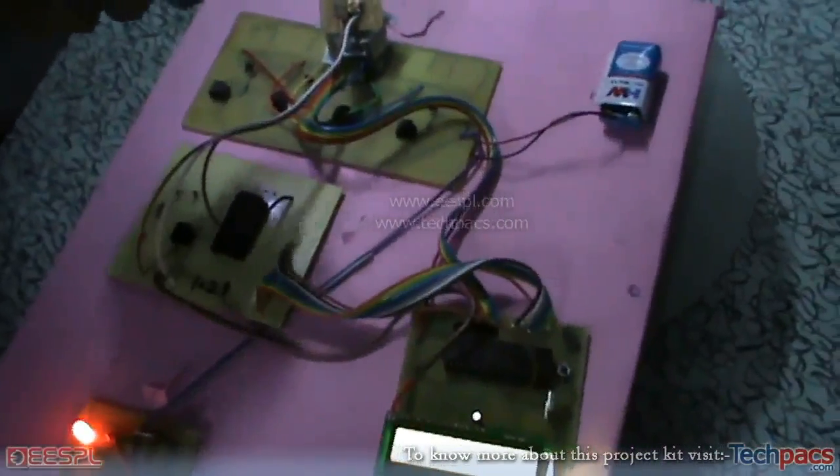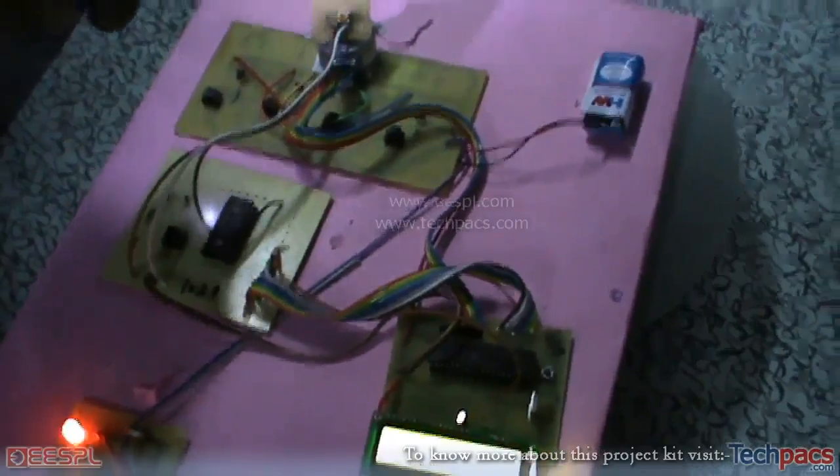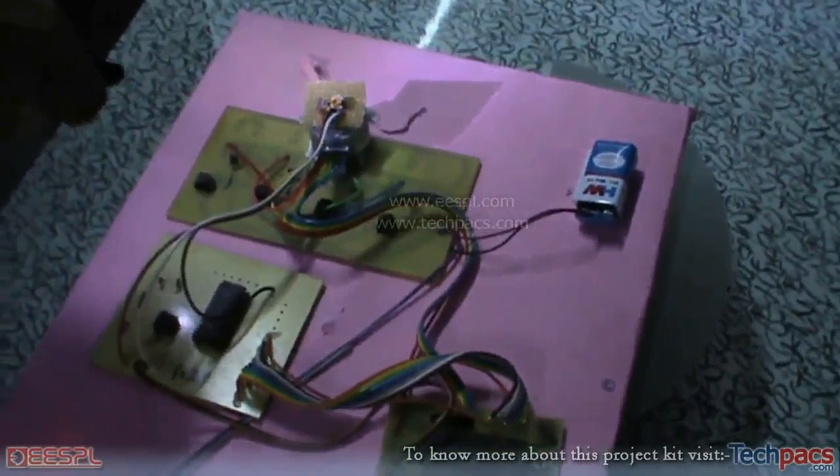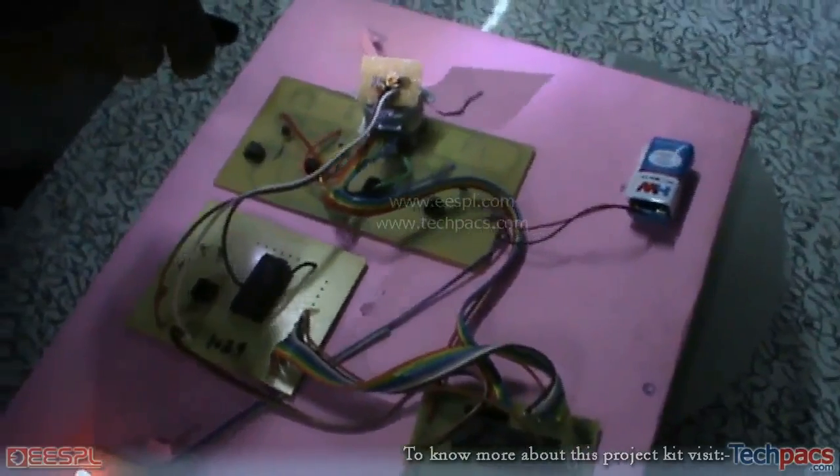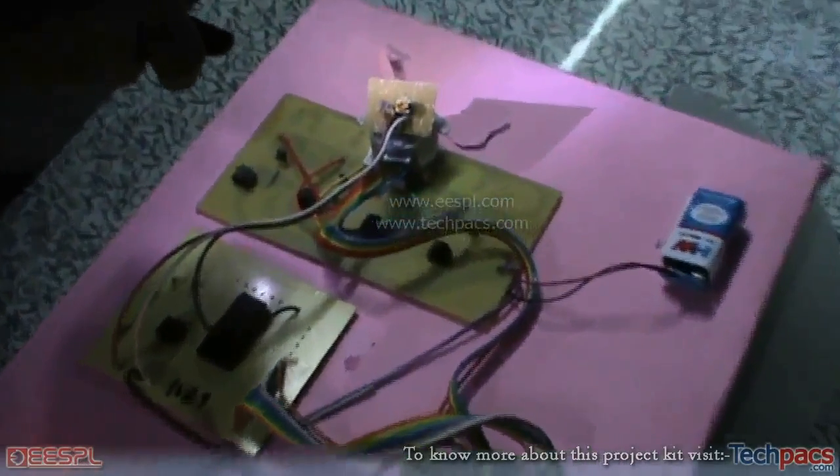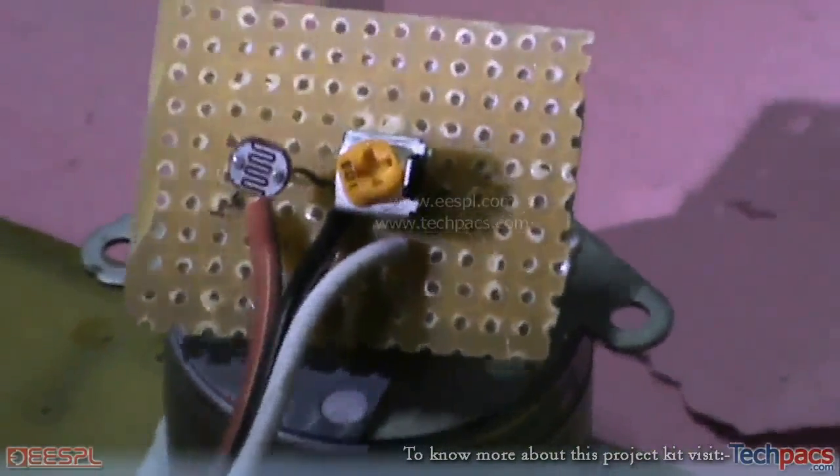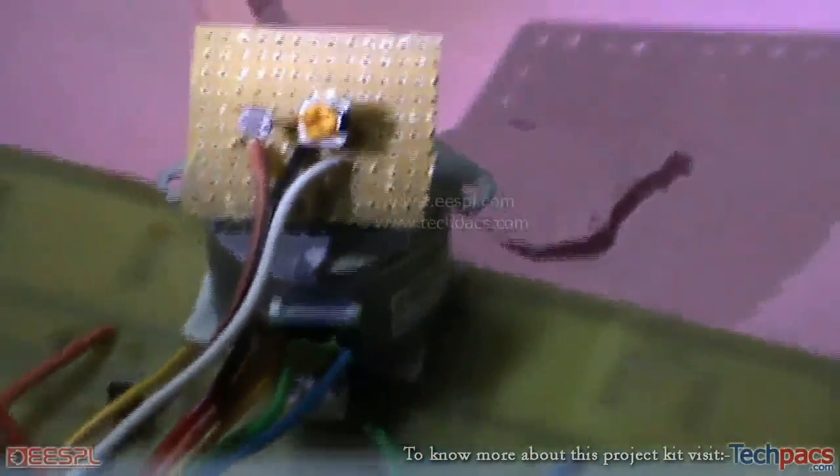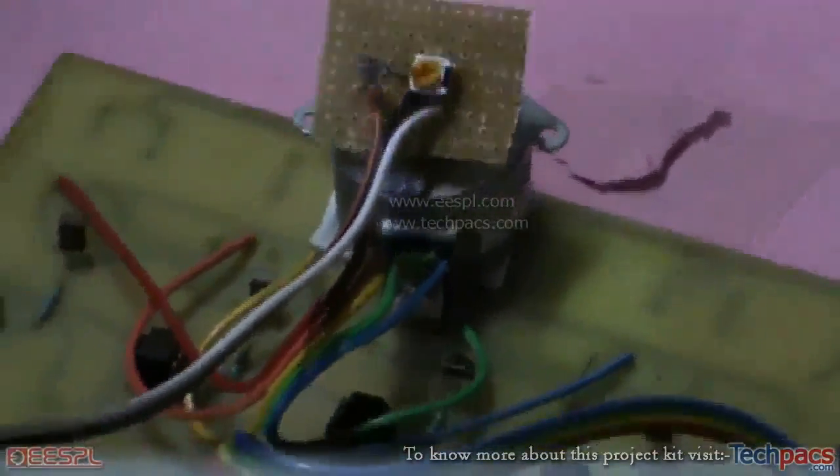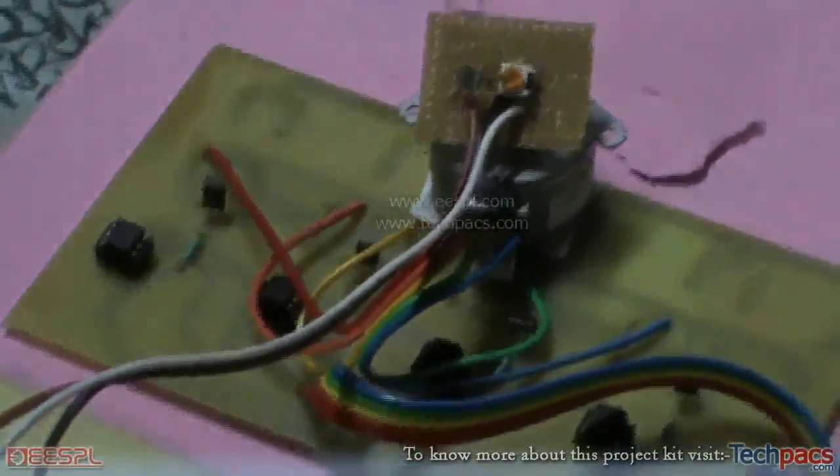The stepper motor is used to rotate the solar panel that is mounted on it along with the light detector sensor. As you can see, this is the LDR. What this project does is it will keep on scanning in 180 degrees to find the maximum value.